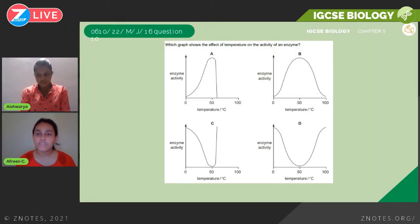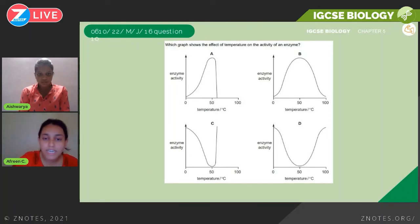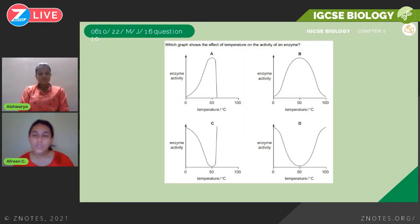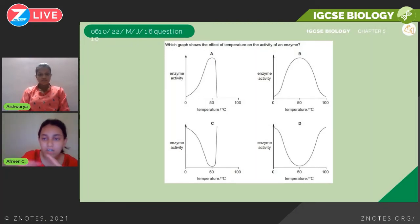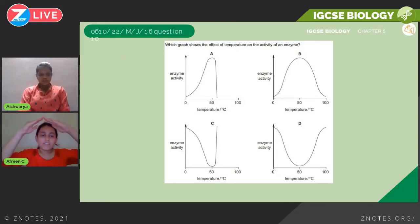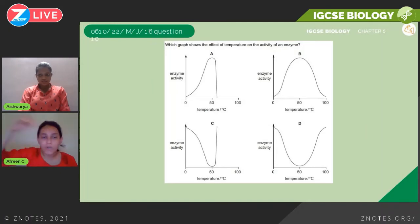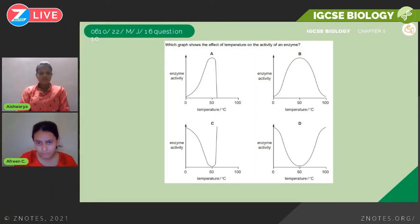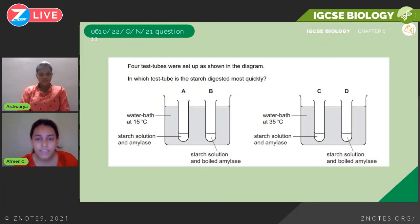Question 2 is from May/June 2016: which graph shows the effect of temperature on the activity of an enzyme? Look at the x-axis and y-axis and observe how the graph peaks. Enzymes are not active at zero degrees Celsius, so options C and D are eliminated. Also, after the optimum temperature the fall is not linear — the graph drops sharply to zero as the enzyme is denatured. Based on this, the correct answer is A.